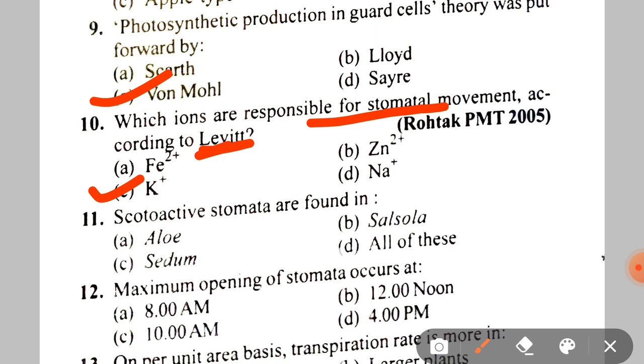Next: scoto-active stomata are found in A. Aloe, B. Agave, C. Opuntia, D. All of these. The correct answer is D — all of these.